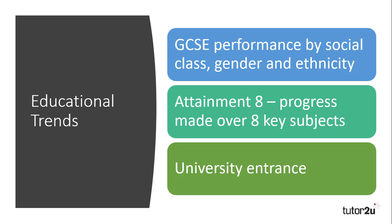Attainment 8 is the new measure for schools that assigns a score to the results of each of eight GCSEs that a student sits. For example, if a student achieves grade five in English, they get five points; if they get a six in maths, they will get six points, and so on across the eight GCSEs. This gives a total score for each student, averaged out across the whole GCSE cohort for that school, demonstrating the attainment level of the school.